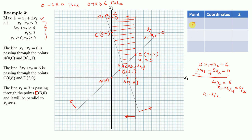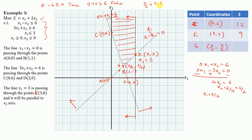Evaluating Z = x1 + 2x2 at each corner point: at point C (0, 6), Z = 0 + 12 = 12. At point F (3, 3), Z = 3 + 6 = 9. At point G (3/2, 3/2), Z = 3/2 + 2×(3/2) = 3/2 + 3 = 9/2.